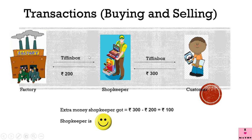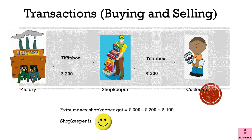One day the shopkeeper got a lovely tiffin box and paid rupees 200 to the factory owner. He sold the same tiffin box to a customer for rupees 300. The extra money the shopkeeper got is equal to rupees 300 minus rupees 200, equal to rupees 100. He got extra rupees 100, so the shopkeeper is again happy.